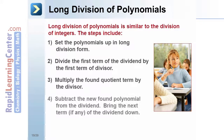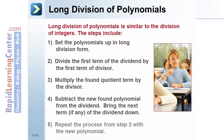4. Subtract the new found polynomial from the dividend. Bring the next term, if any, of the dividend down. And 5. Repeat the process from step 2 with the new polynomial.